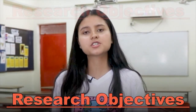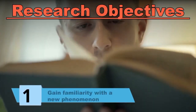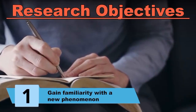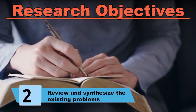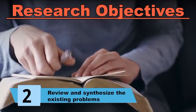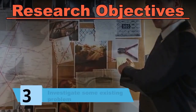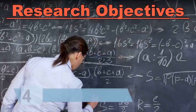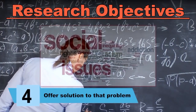The first objective of research is to gain familiarity with a new phenomenon or to develop a new insight into a phenomenon. Second is to review and synthesize existing problems. Third is to investigate some existing problem. Fourth is to offer a solution to that problem.